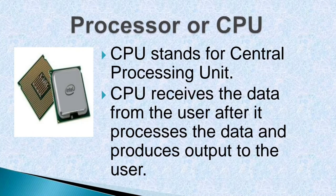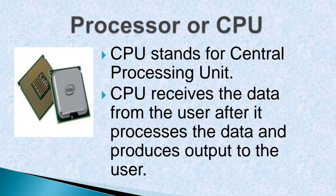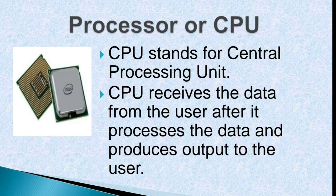Next is the processor or CPU. CPU stands for Central Processing Unit. The CPU receives data from the user, processes it, and produces output. It processes data and instructions provided through input devices and gives results to the user through output devices. The CPU is often referred to as the brain of the computer.